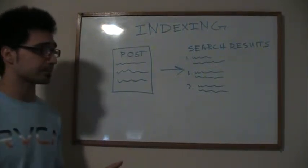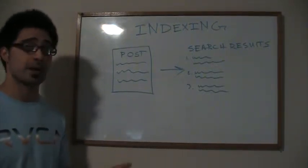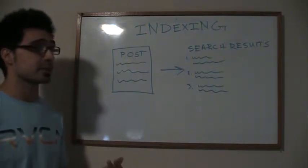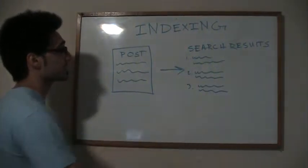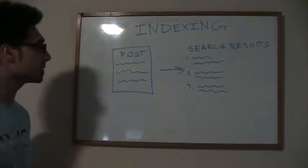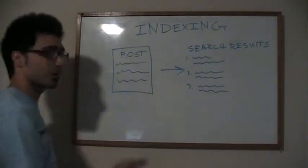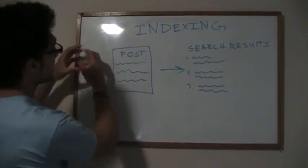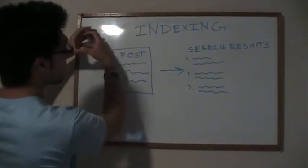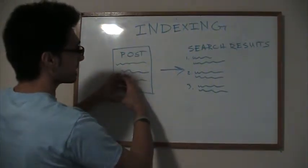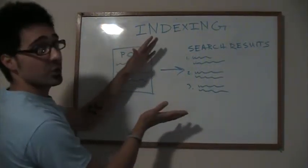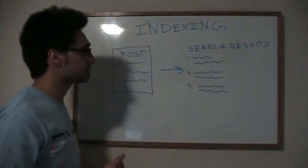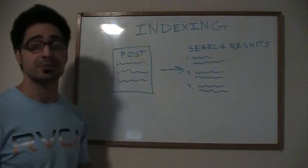Indexing is pretty much your pages being read by the crawl bot at a certain frequency, and then taking those pages or posts and putting them in the search results. A really simple diagram would be: you got your Google crawler over here, and then you got your post. The Google crawl bot will come, read your post, and then transfer it over to the search results. That's indexing in a really simple way.